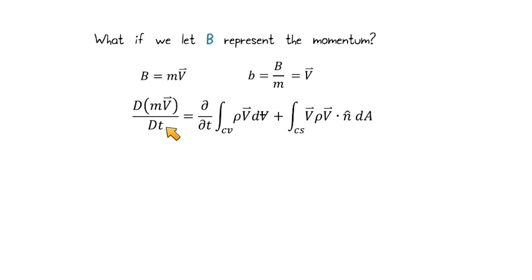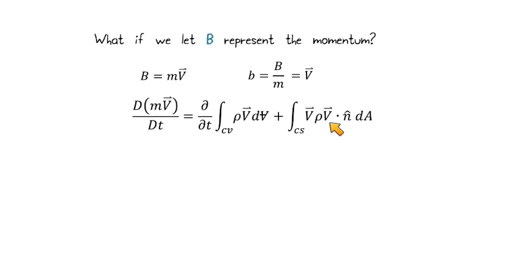The rate of change of momentum within the system with respect to time equals the rate of change of momentum within the control volume with respect to time, plus V times rho V dot N dA. This is the momentum that crosses the boundary. Remember, V dot N is related to how much of our fluid crossed the boundary.